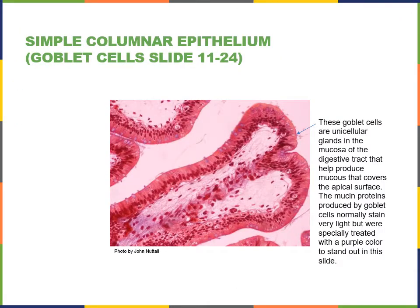Here we see a light micrograph of a mucous membrane from the digestive tract stained specially to show goblet cells with a purple stain. The goblet shape is shown in purple with tissue that was specially stained so that the mucin proteins appear purple.